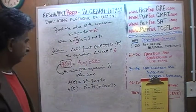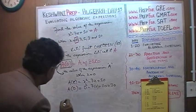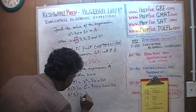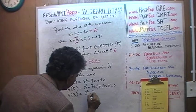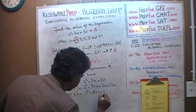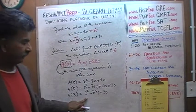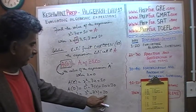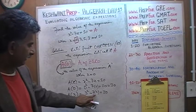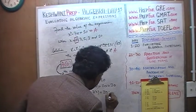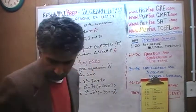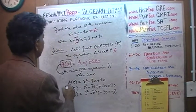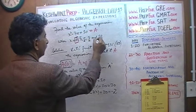Now we find A(3). We replace x with 3: x squared becomes 3 squared, 7x becomes 7 times 3, plus 10. 3 squared is 9, 7 times 3 is 21, and 9 plus 10 is 19, minus 21 gives negative 2. Let me confirm — yes, A(3) equals negative 2. We have done 0 and 3; we have 5, 8, and 10 to go.